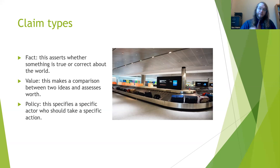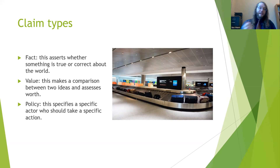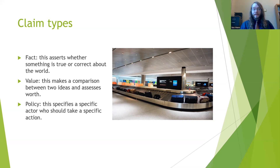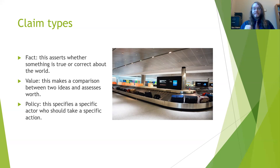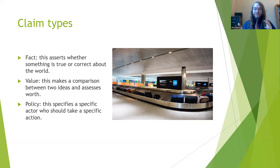There are also different types of claims. A fact claim is assessing whether or not something is true or correct — like saying 'the sky is blue,' or at baggage claim, 'that is my bag.' A value claim makes a comparison between two ideas and assesses worth — for instance, 'dogs are better than cats,' or 'my bag is too heavy.' And then a policy claim specifies an actor who needs to take a particular action, such as 'the airline company needs to get the bags available at baggage claim sooner' — the airline being the actor, getting bags ready being the action.